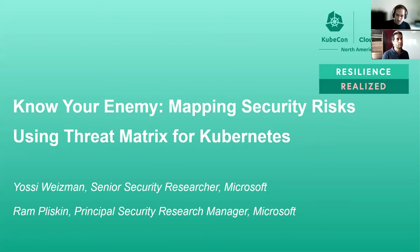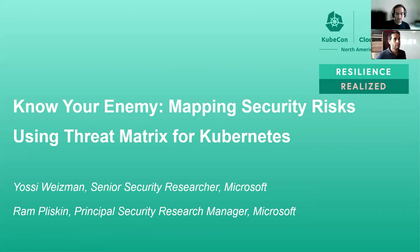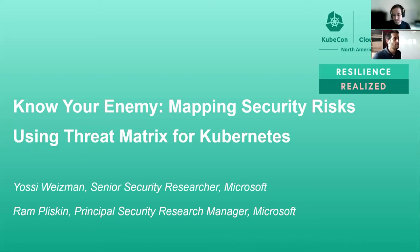We will talk in this session about the threat matrix for Kubernetes, which is a knowledge base of the security threats that target Kubernetes. This matrix is one of the first attempts to systematically map the threats of Kubernetes, and we will see how we can use it to improve the security of our environments and measure our security coverage to potential attacks. Ram will start with some background of this project.